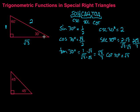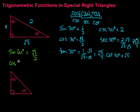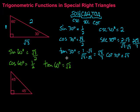We can do the same thing for 60 degrees. The sine of 60 equals the opposite over the hypotenuse — the square root of 3 over 2. The cosine of 60 equals the adjacent over the hypotenuse, which is 1 over 2. And the tangent of 60 equals the opposite over the adjacent — the square root of 3 over 1, or just the square root of 3.